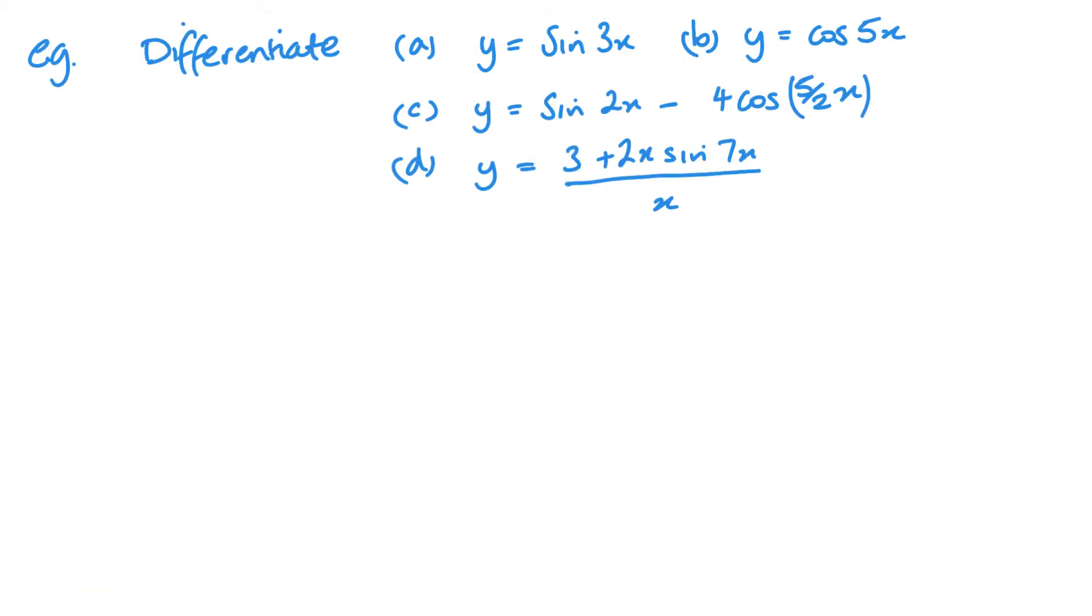Let's look at some examples. So part a here, we have y equals sin 3x. So when I differentiate this, sin goes to cos. And then I multiply by this part, the differential of 3x, which is 3. So it's 3 cos 3x.